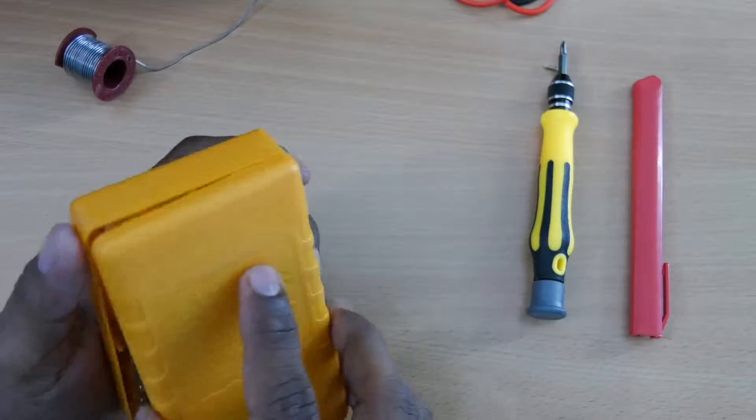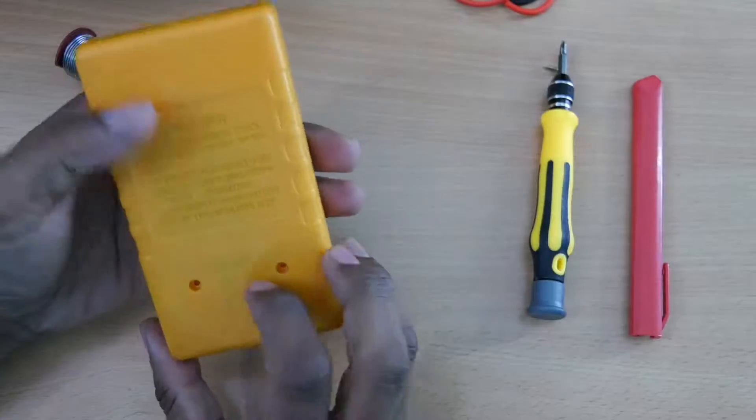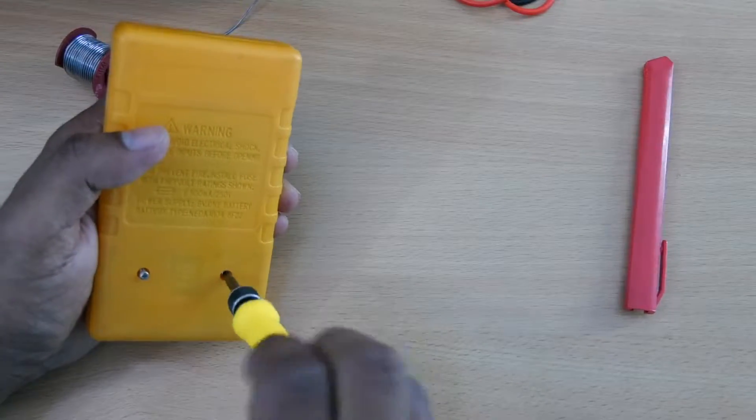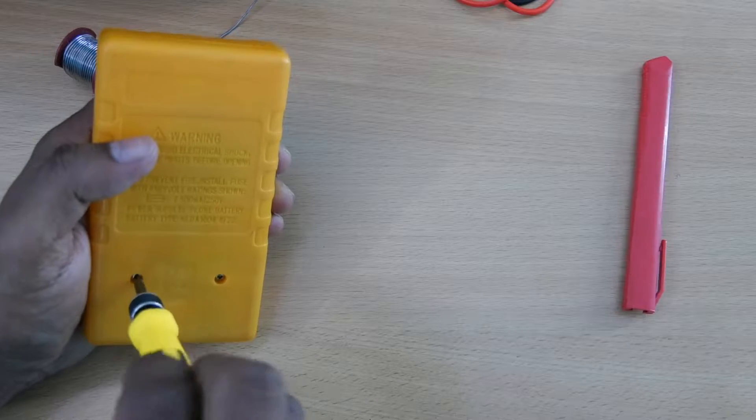The fuse will protect the multimeter when the selection is in milliampere or in microampere. In the next video we will modify it further to add a backlight to the display of this multimeter.